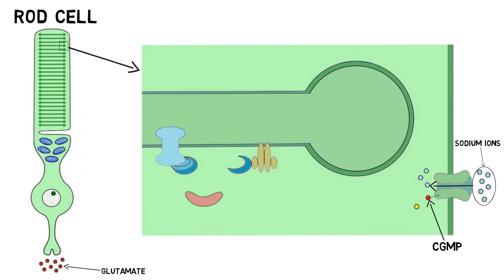Inside the rod cell, there is a substance called rhodopsin, which is made up of a protein called opsin and a molecule called retinal, which is capable of absorbing light.